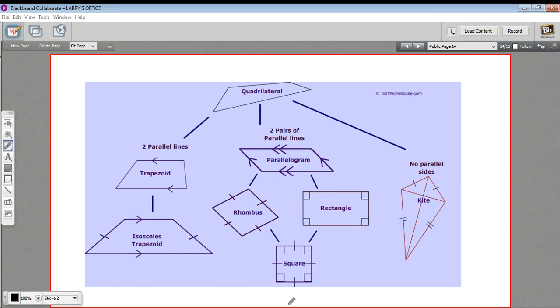A rhombus, a rectangle, and a square are all a type of parallelogram. They just have some extra things going on. So a rectangle has two sets of parallel sides that are the same length as each other, or so does a rhombus, so does a square.